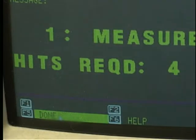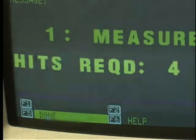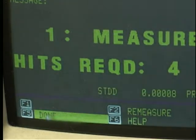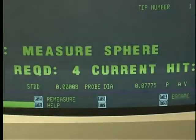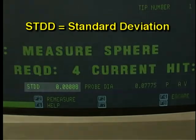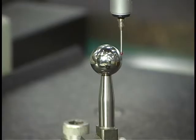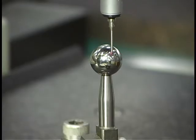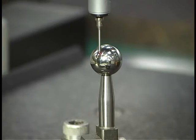The ninth and last hit is at the top of the sphere. After the last hit, the Done selection on the screen is highlighted. Clicking Done causes the computer to calculate the probe tip diameter. The display will show the calculated dimensions of the probe tip as well as the standard deviation for the measurements taken.